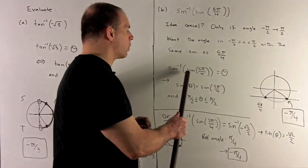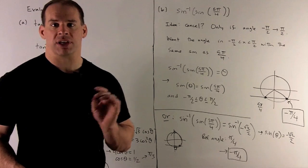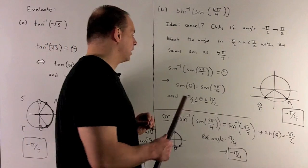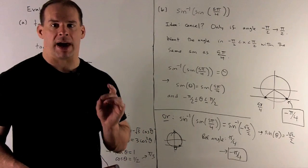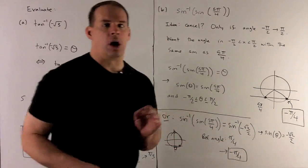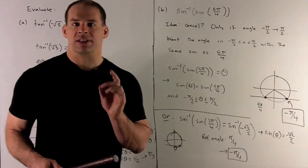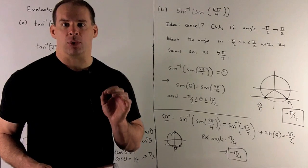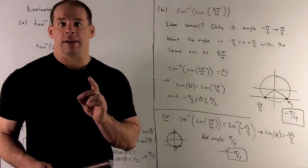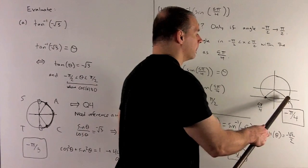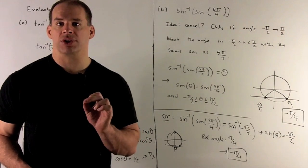If we box out sine of 5 pi over 4 and call that theta, then sine of theta equals sine of 5 pi over 4, and theta is between minus pi halves and pi halves — so we're looking at quadrant one and quadrant four. Looking at 5 pi over 4, we have the point in quadrant three. Since sine of theta equals sine of 5 pi over 4, they have the same y-value in the unit circle. Drawing a horizontal line through 5 pi over 4, the point in quadrant four with that same sine value gives us reference angle pi over 4. To be between minus pi over 2 and pi over 2, we go with minus pi over 4.